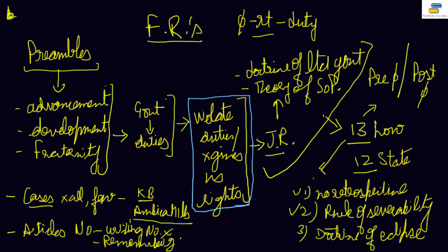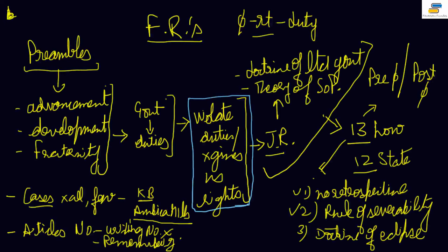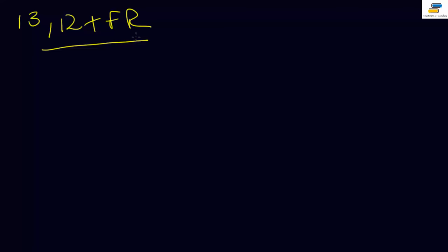So we now understand judicial review, the theory of separation of powers, and the doctrine of limited government. The next step is Article 13, which is the practical implementation of all these concepts in the Indian Constitution, along with Article 12 and all the fundamental rights. The lecture will stretch beyond the stated time, so I will cover Article 13 and these basic provisions in the next lecture.